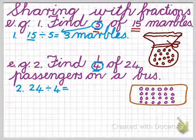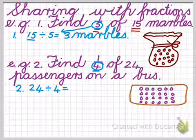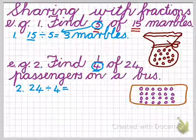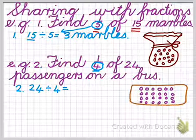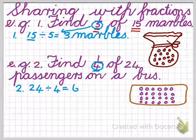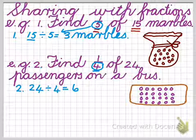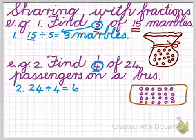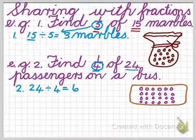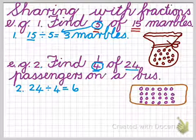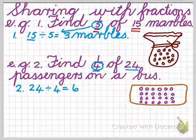We know that four times what is 24? That's right. It's four times six is 24. So now we know that there will be then in one quarter of the 24 passengers, there will be six passengers.